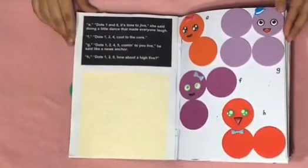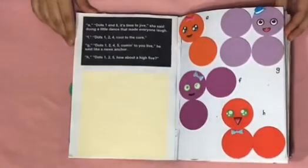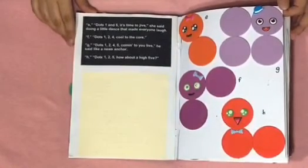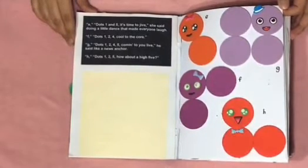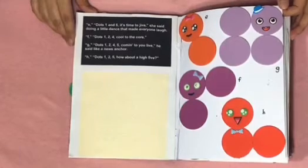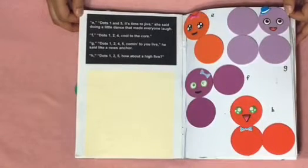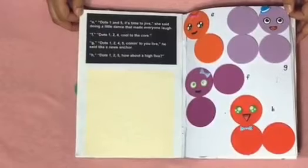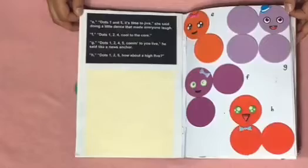E dots one and five. It's time to dive, she said doing a little dance that made everyone laugh. F dots one, two, four. Cool to the core. G dots one, two, four, five. Coming to life, he said like a news anchor. H dots one, two, five. How about a high five? Here's orange Little E with a pink bow, purple Little F with a light blue bow and white polka dots, lavender Little G with a blue hat, and red Little H with a blue striped bow top.